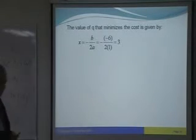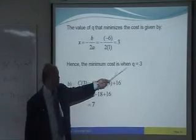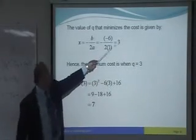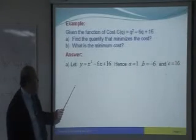So, from here, the minimum cost is when Q equals to 3. Clear or not? So, Q equals to 3. Alright. Okay. Go back to the question just now. Good question.